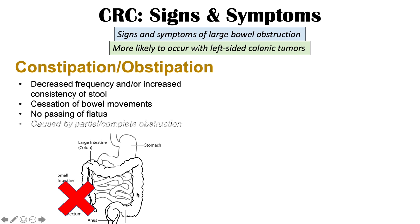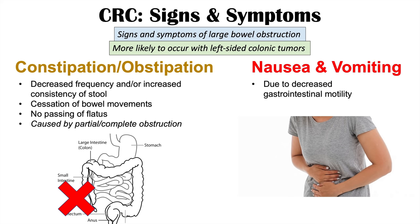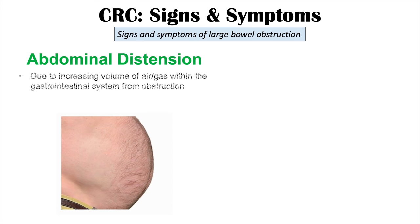Nausea and vomiting can ensue due to decreased gastrointestinal motility. If there's a big blockage in the gastrointestinal tract, everything backs up, causing nausea and vomiting. Abdominal distension also occurs due to increasing volume of air and gas within the gastrointestinal system from the obstruction. If no flatus can pass the obstruction, air builds within the GI tract causing distension, and the severity depends on the location of the obstruction.